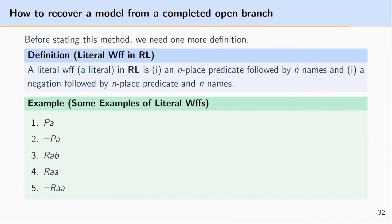Before I explain how we can construct a model from a completed open branch, it's helpful to remind ourselves of one particular definition: the notion of a literal well-formed formula. A literal well-formed formula is an n-place predicate followed by n names, or a negated n-place predicate followed by n names. Some examples are: PA, not PA, RAB, RAA, not RAA. Another way of thinking about it is that it's a simple formula we cannot decompose further using our decomposition rules.